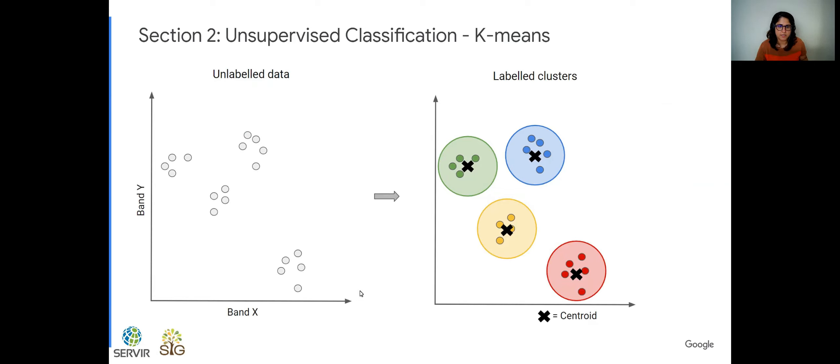So here, for example, in the spectral space, this is just hypothetical. We have band 1 and 2, and these are the pixels. In the spectral space, some pixels get closer together because they're similar. And these will get clustered together. And specifically with k-means, k is just the number of clusters you want to have.